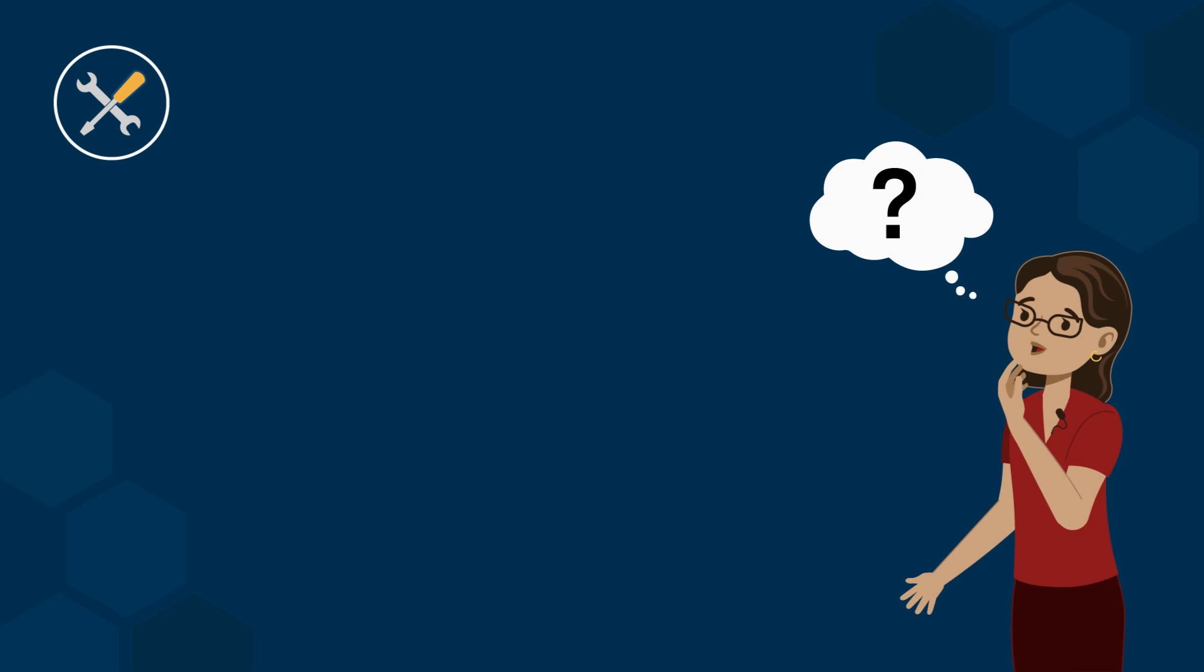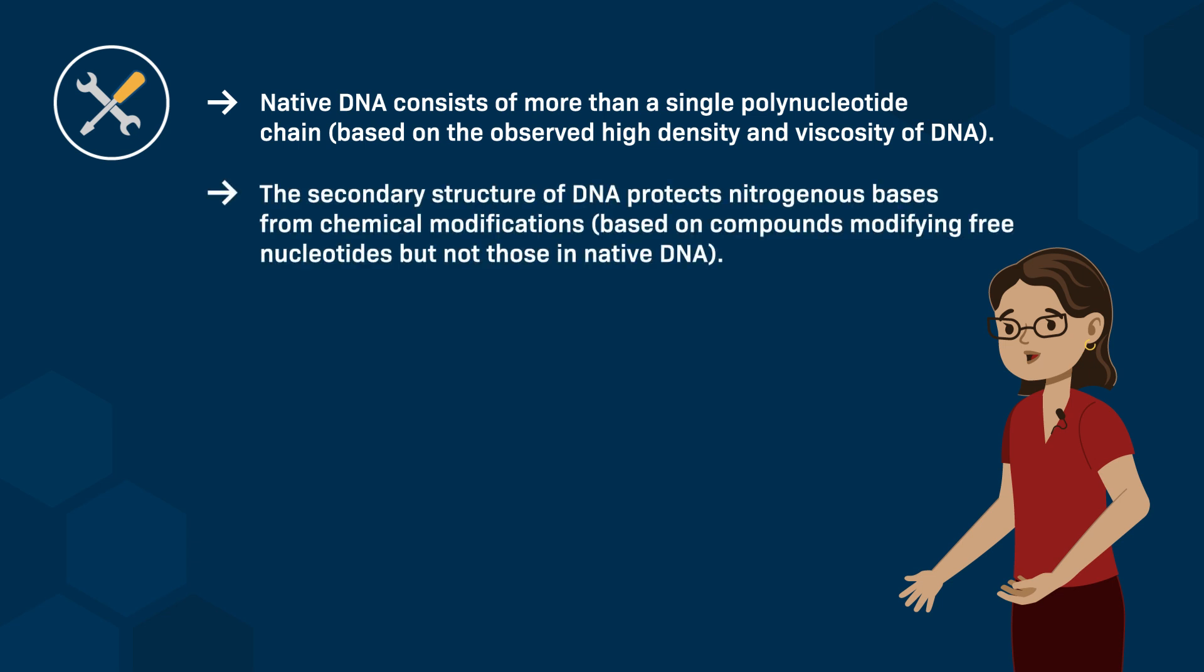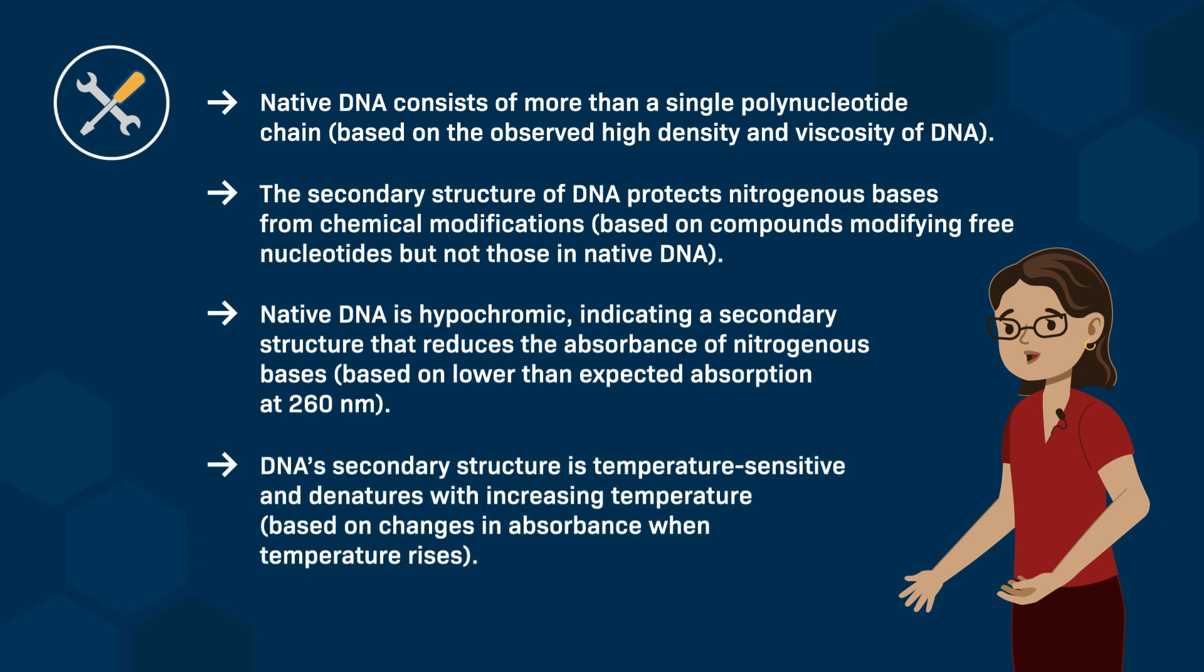So what does this tell us? This experiment tells us four things. First, native DNA consists of more than a single polynucleotide chain, based on the observed high density and viscosity of DNA. Second, the secondary structure of DNA protects nitrogenous bases from chemical modifications, based on compounds modifying free nucleotides but not those in native DNA. Third, native DNA is hypochromic, indicating a secondary structure that reduces the absorbance of nitrogenous bases, based on the lower than expected absorption at 260 nm. And fourth, DNA's secondary structure is temperature sensitive and denatures with increasing temperature, based on changes in absorbance when temperature rises.